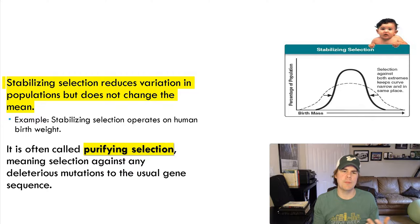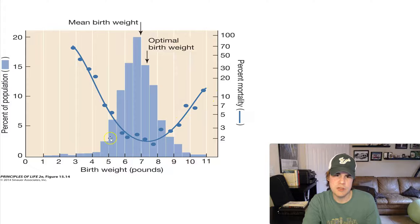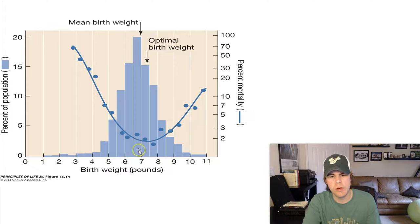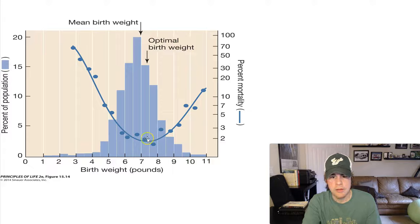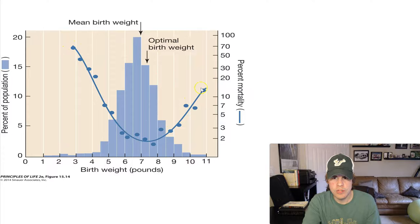Stabilizing selection, also known as purifying selection, has a great example in human birth weight. The bar graph shows that mortality — the percent that tragically die due to complications — is lowest around six and a half to seven pounds, which is the mean birth weight. But if you're too small or too large as a baby, your chance of dying tragically goes up dramatically. So nature selects the mean — that is stabilizing selection.